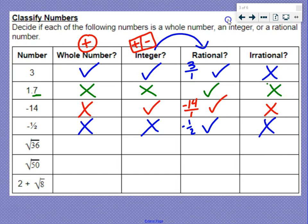Square root of 36. Square root of 36, if we're not sure what that is, that is our perfect square: 6 times 6 equals 36. So square root of 36 equals 6. That means it is a whole number, it is an integer, it is rational because we can write it as a fraction, 6 over 1. But it's not irrational.